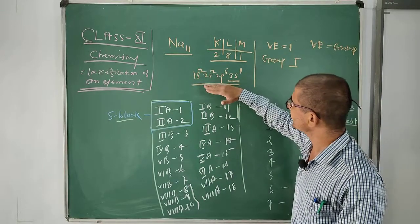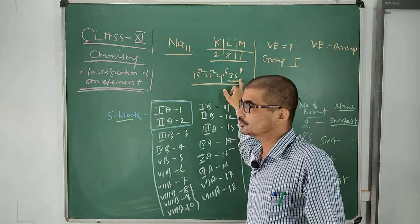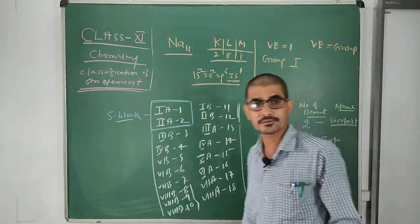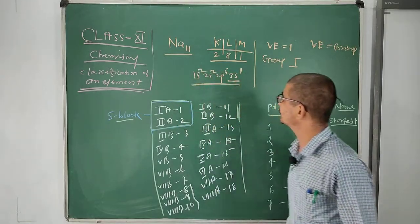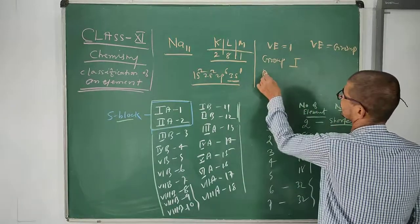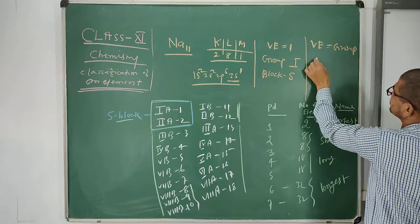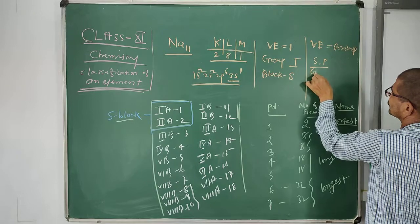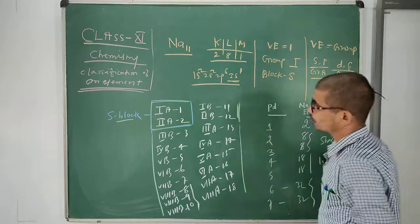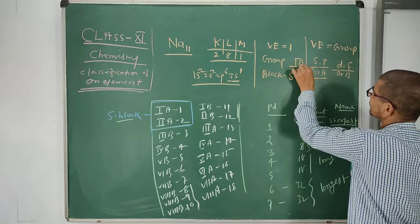After writing the electronic configuration in terms of orbital, we can see that the last electron enters the S orbital, so it is called an S block element. If the last electron enters the P orbital, it is a P block element; D orbital makes it D block, and F orbital makes it F block. Because sodium's last electron enters the S orbital, its block is S. Now, if the block is either S or P, the element belongs to subgroup A; if either D or F, it belongs to subgroup B. So sodium belongs to subgroup A — that is, first A.